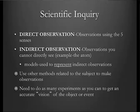A lot of you have done some indirect observations at holiday time — shaking a box and trying to figure out what's inside based on the information you get from shaking it. When we make these observations, we often represent them using models. Just like a model of an airplane or a car, we use them to represent those indirect observations — not the exact object, but a representation of it. These direct observations including qualitative and quantitative, as well as indirect observations, allow us to get an accurate vision of that object or event.